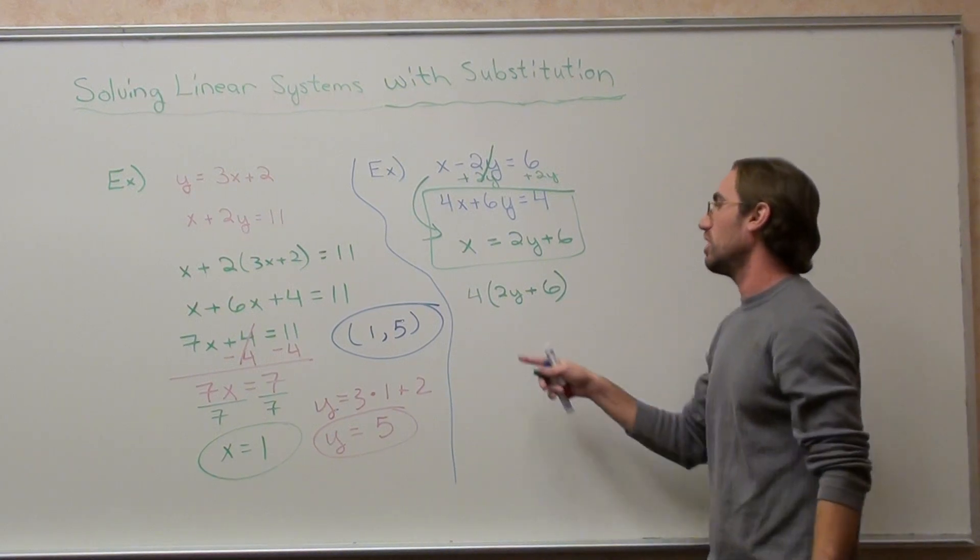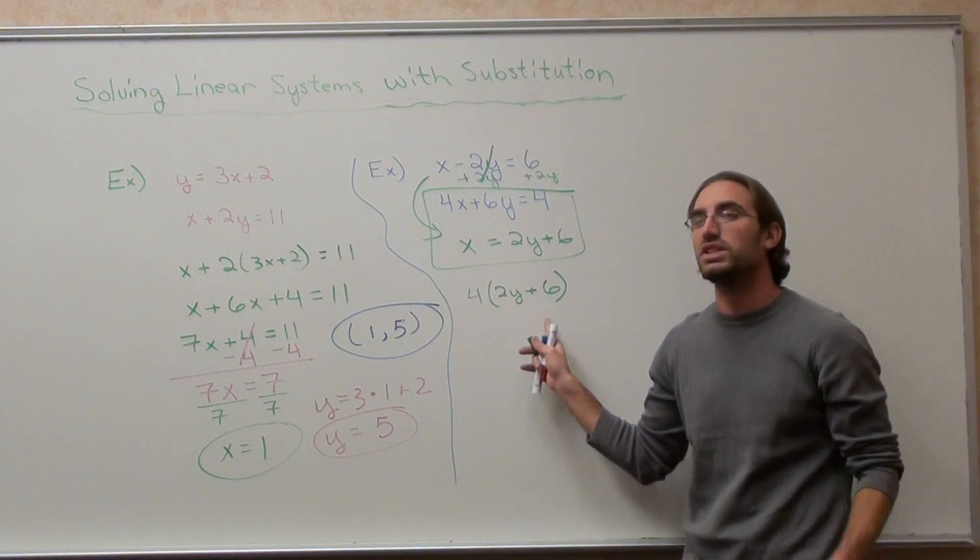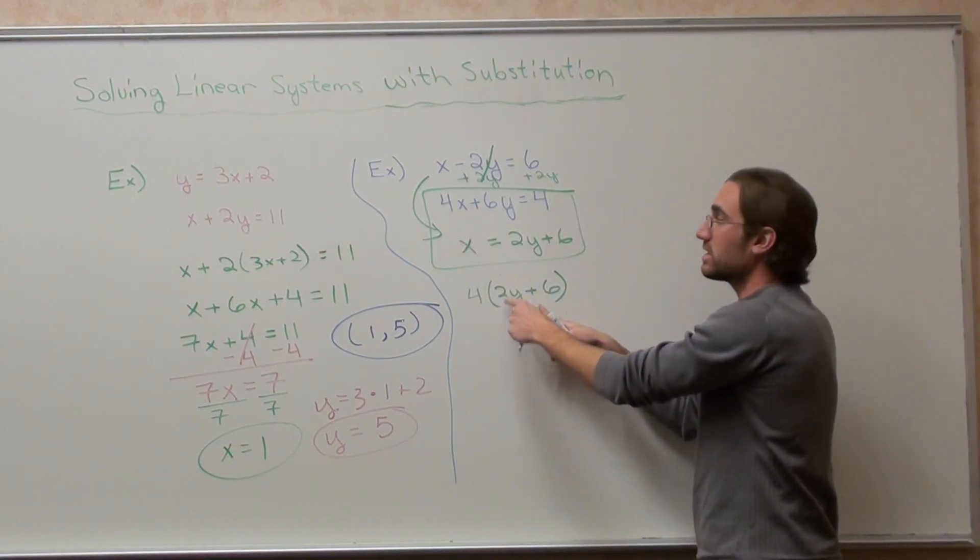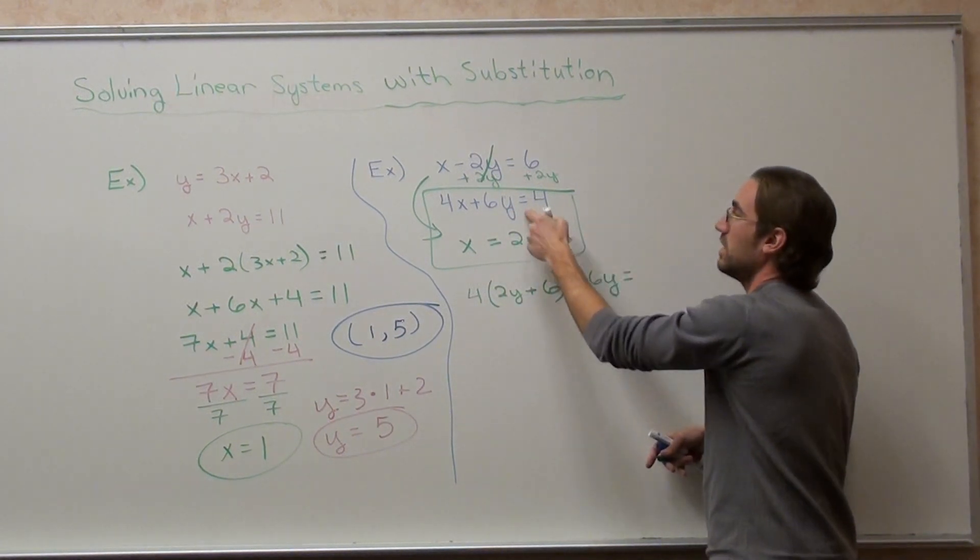Don't forget to put parenthesis when you're using substitution for linear systems. It makes it so much easier. Students will say, oh, that's 8y, and then they'll leave this as 6. No, it's not 6. It's 4 times 6, which is 24. So back to what I was going to say. 4 times x, but that's my x, plus 6y equals 4.